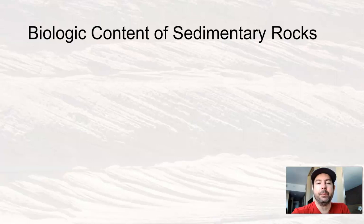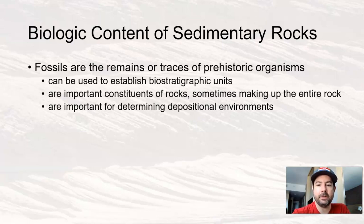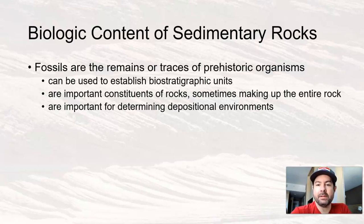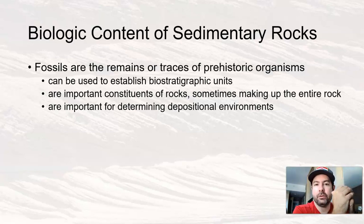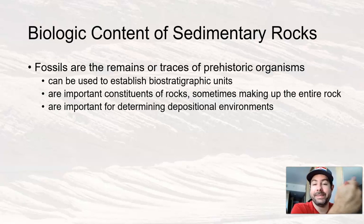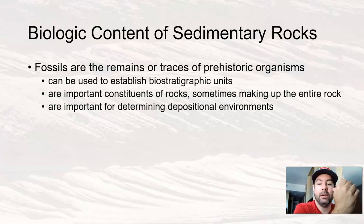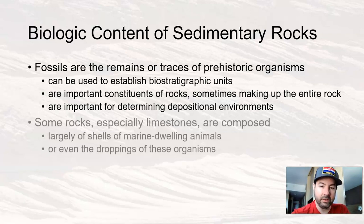So there can be biologic content in sedimentary rock. Fossils are going to be that material for the most part. Fossils are the remains or traces of prehistoric organisms. When we're finding fossils in rocks, we can use those to make biostratigraphic units. Sometimes they're just important constituents of certain sedimentary rocks, and they might make up some, most, or all of a sedimentary rock. They're also important for determining depositional environments.